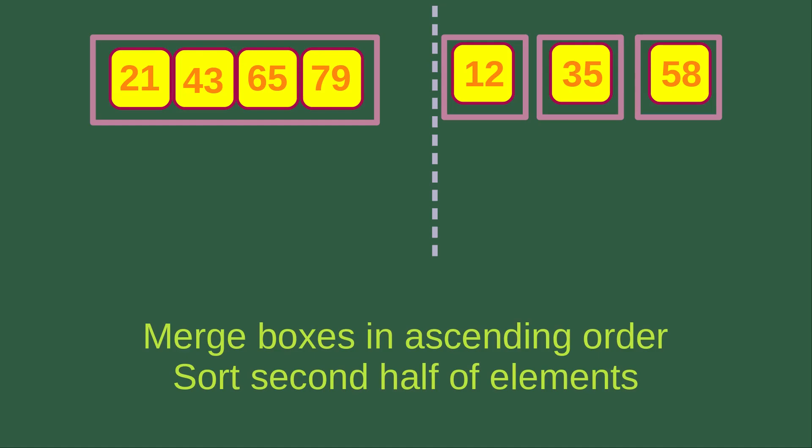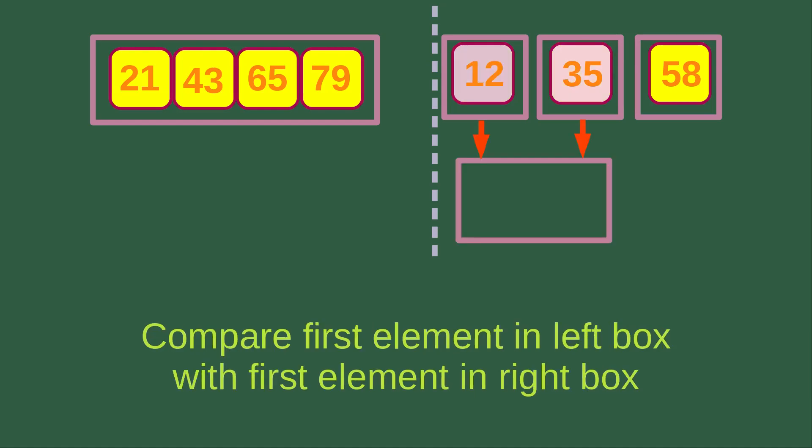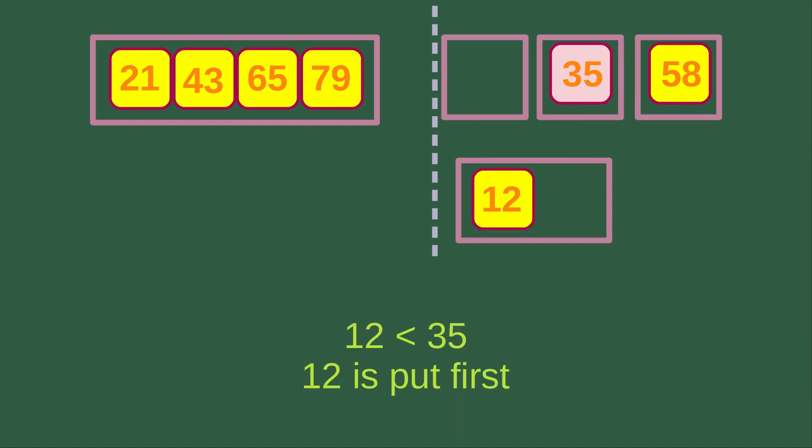The left-hand side is merged already, and we can go to the right-hand side indicated by the dashed line. Now we are going to merge the boxes on the right-hand side in ascending order. We compare the element in the left box, which is 12, with the only element in the right box, which is 35. Because 12 is smaller than 35, we put 12 into the merging box.